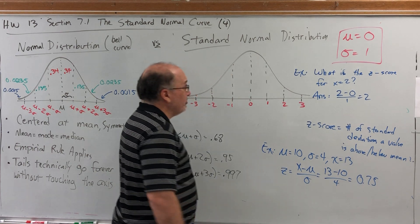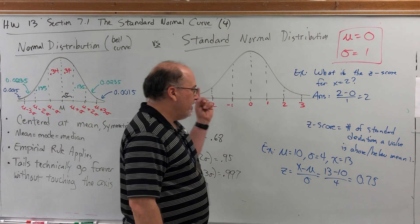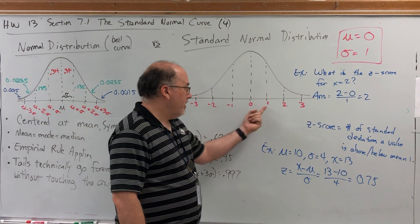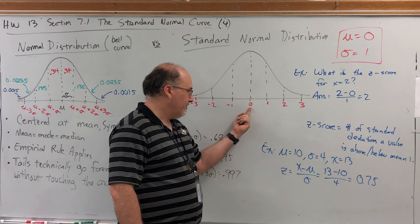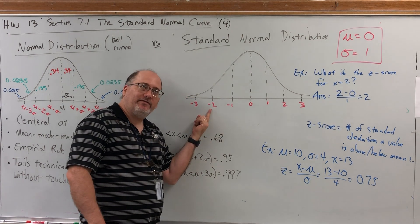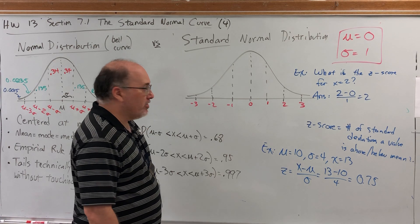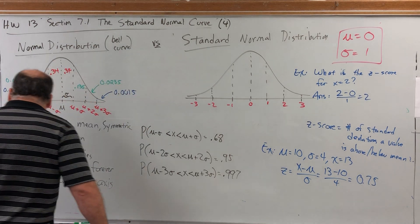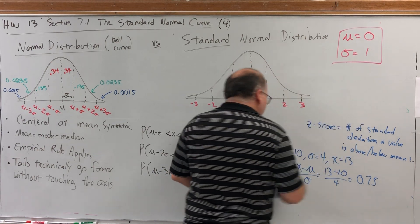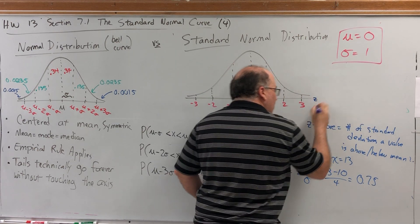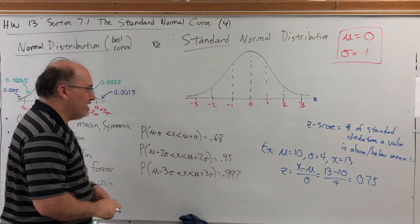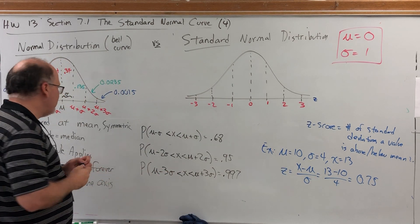So, what makes a standard normal distribution so special? Each number is its own z-score. 1 is 1 standard deviation to the left of 0. Negative 2 is 2 standard deviations to the left of 0. So, each number is its own z-score. That's why, in a standard normal distribution, it is not uncommon to see the letter z on this axis and call it the z-axis, meaning that each number represents its own z-score.